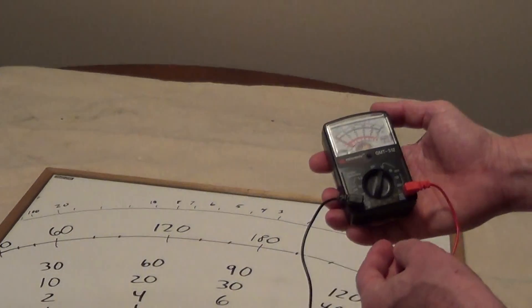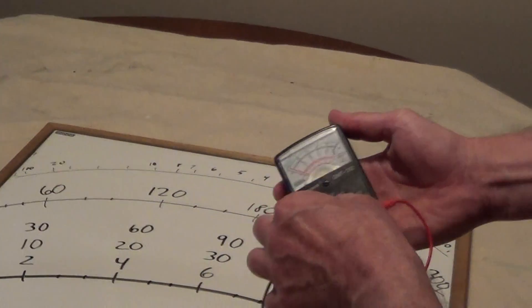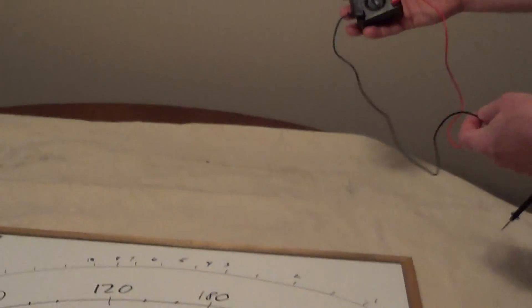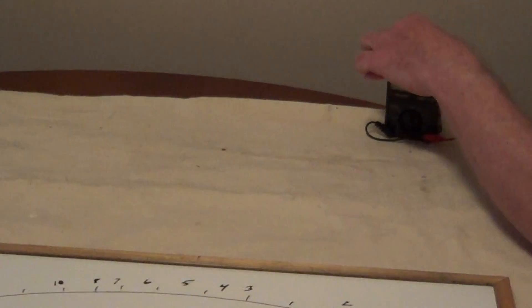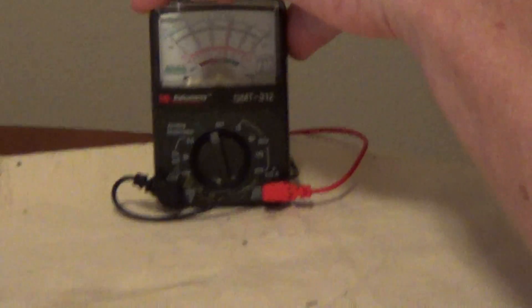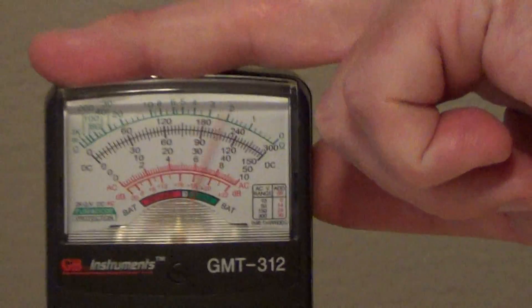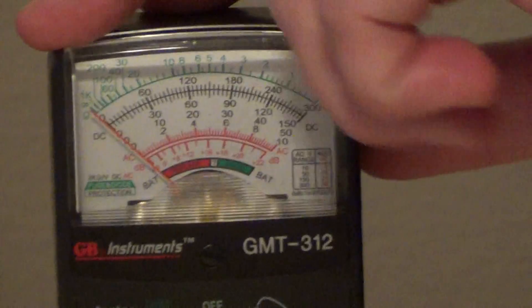We can also test an outlet to see if there's current. I'm going to change this to 150 AC and I'll plug this in. It should show 120 volts, and you can see we have electric on that current. Just an excellent tool to have, easy to use.